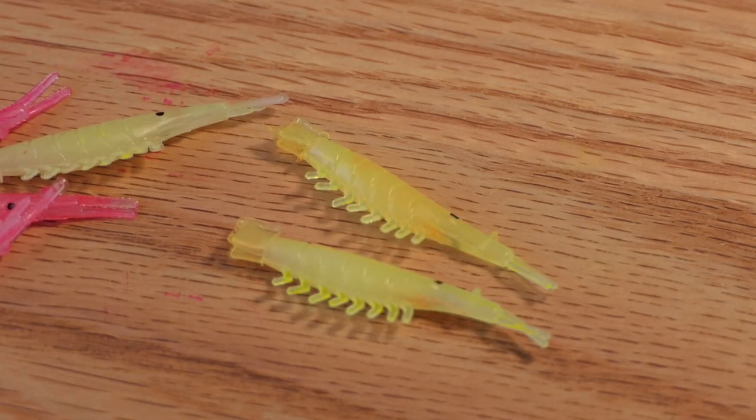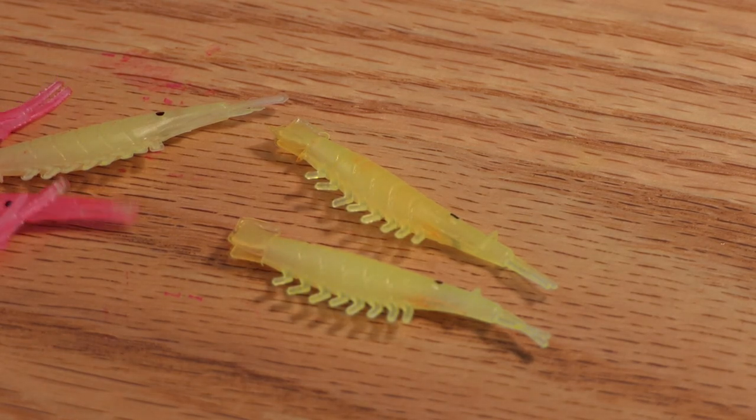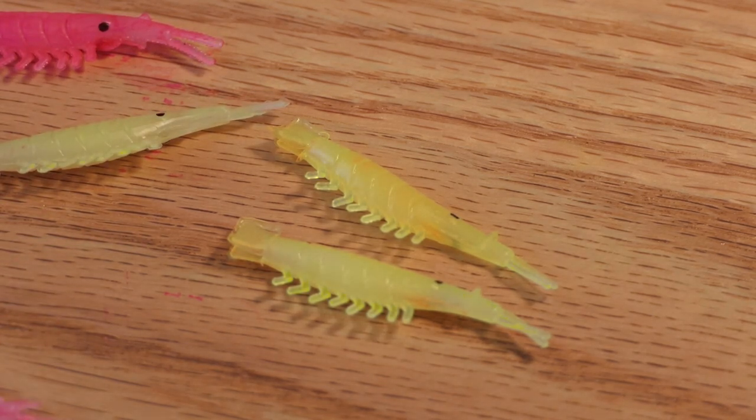So you can vary up the intensity of the color if you want to. Sometimes those subtler colors might let a little bit of that glow show through, especially in the early morning and deep water situations. But yeah, these can really change the intensity. So make sure to let it dry between each coat or application.